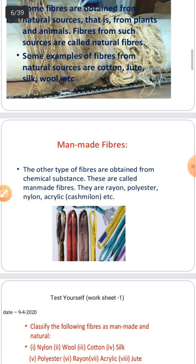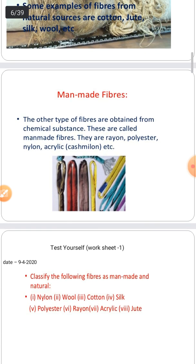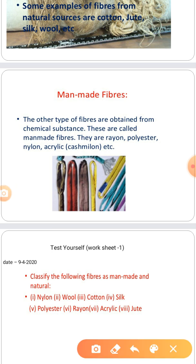Man-made fibers are fibers prepared by humans from chemical substances. Examples of man-made fibers are rayon, polyester, nylon, acrylic, and acrylic, which is also known as cashmelon.